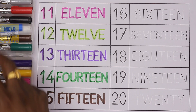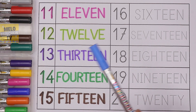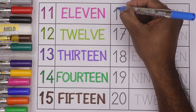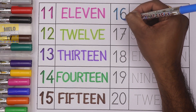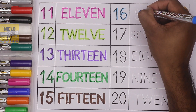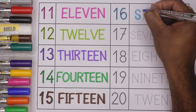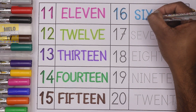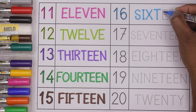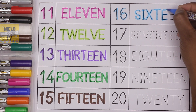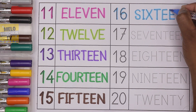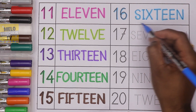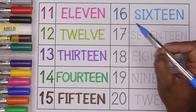Next I'll take blue color — this is blue color — to write the number 16. 1, 6, 16. And the spelling is S I X T E E N. 16.